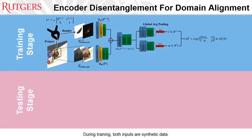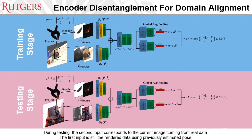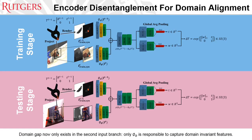Since our network is trained purely on synthetic data, an additional encoder disentanglement technique is proposed to better align the domain gap. During the training stage, both inputs are synthetic data. In the lower branch, the synthetic data are rendered with physically plausible domain randomization to generate higher quality synthetic data. However, during the test stage, the second input corresponds to the current image from real data, while the first input is still the rendered image using the previously estimated pose. The domain gap only exists in the second input branch, so only phi_b is responsible for capturing domain-invariant features, while phi_a always captures features from the synthetic domain.